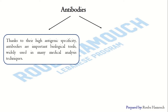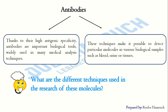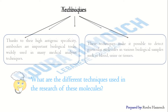Due to their high antigenic specificity, antibodies are important biological tools commonly used in laboratory medicine and in many medical techniques. These techniques make it possible to detect particular molecules in various biological samples such as blood, urine, or tissues — detecting either antibodies in serum or urine, or antigens in blood, urine, or tissues.